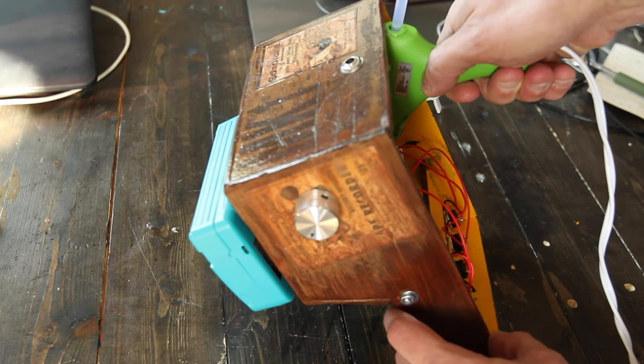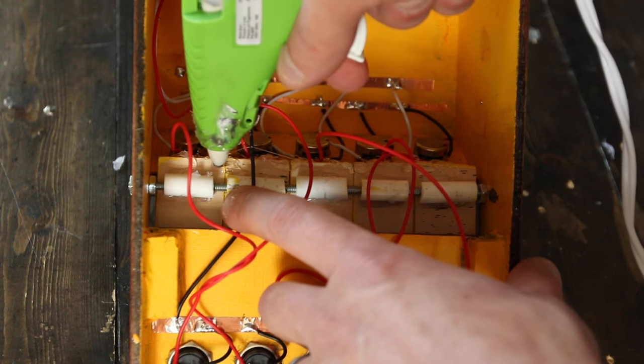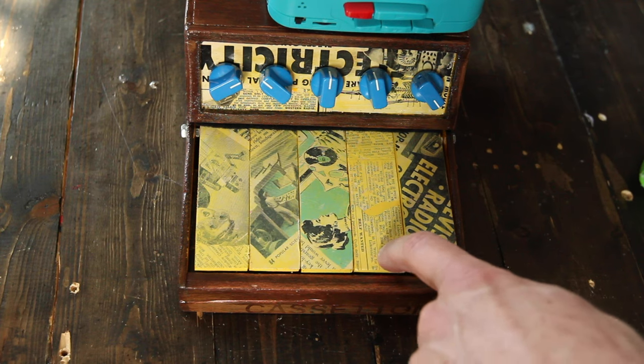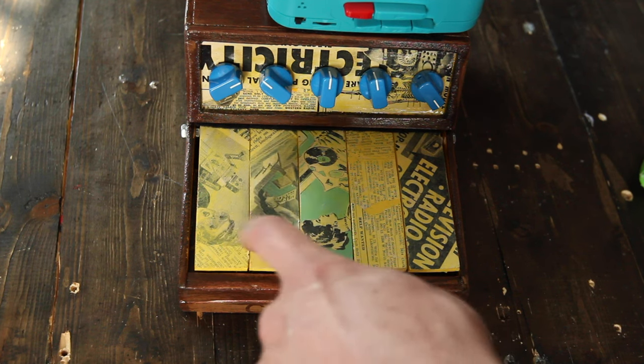And then I actually join each key to its neighbor with a little bit more hot glue. The keys still move independently just fine, and now their action feels a lot more stable.